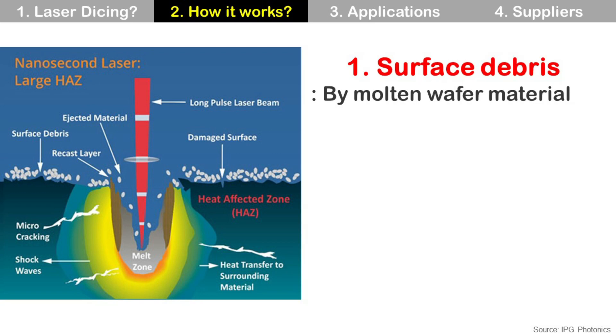To prevent this, people use surface coating. So process flow will be apply surface coating, laser ablation, remove surface coating. But surface coating is an additional process with additional material, so it adds cost. That is the reason people use surface coating only for special cases.